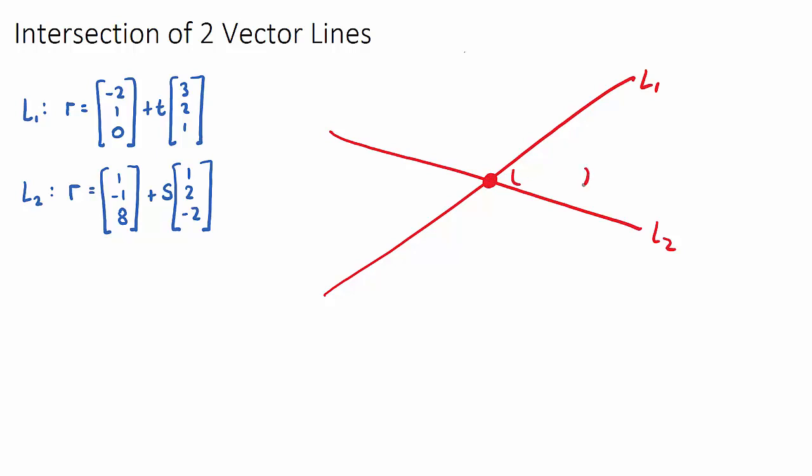This can be a coordinate, or we can give it a position vector from the origin. So we can either give it a coordinate or a position vector, and we're going to find that point. When they intersect, they're going to be equal to each other, those two lines.